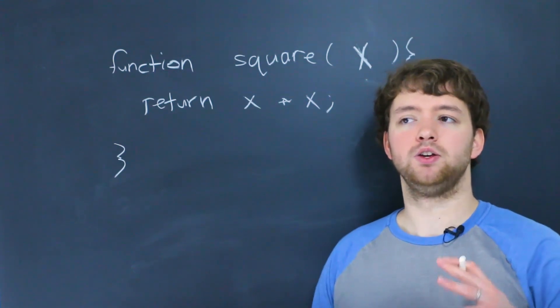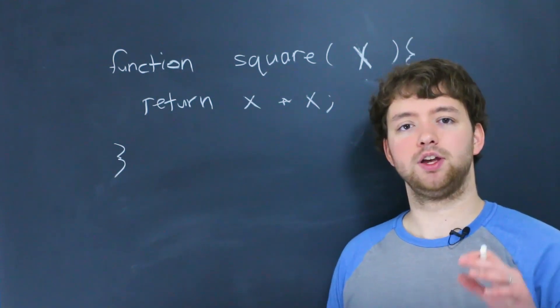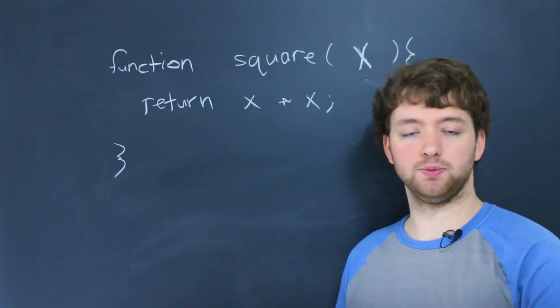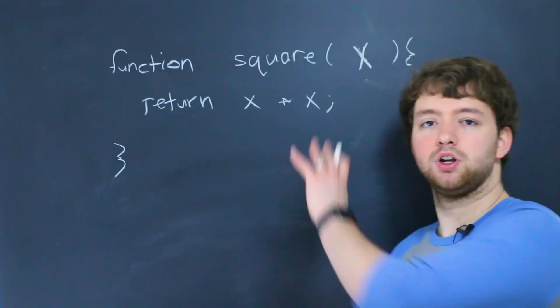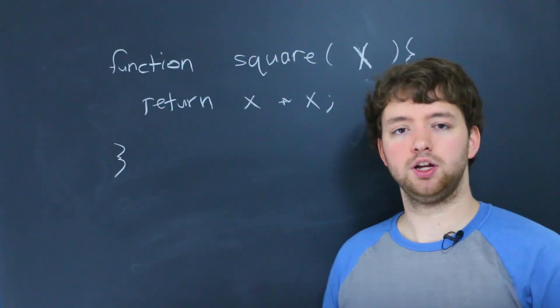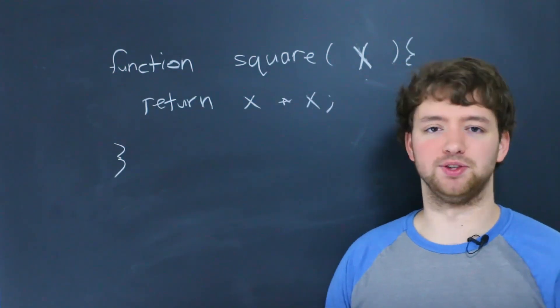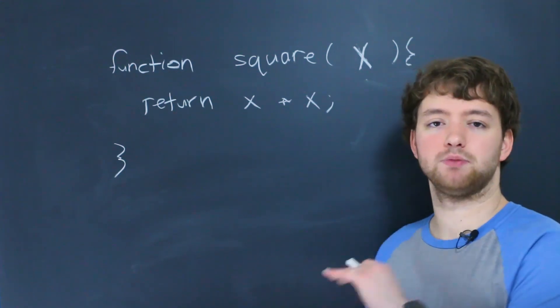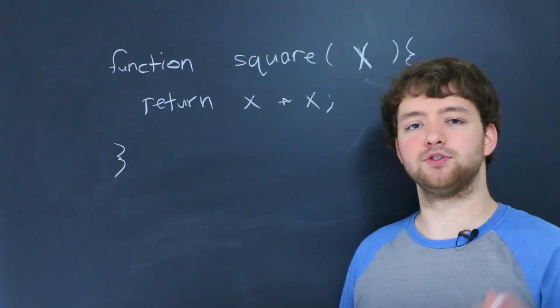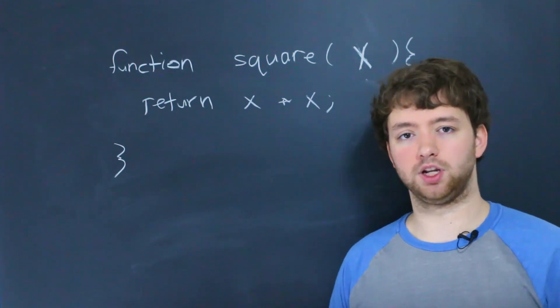That's because when we're doing overloading in other programming languages, the different types of arguments passed in will determine which version of the function to call. So we might have a square that takes no arguments, and we might have one that takes three arguments or whatever it might be. But because JavaScript allows any number of arguments, there's no concept of function overloading.